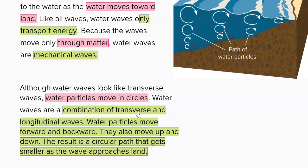Since it's a combination of both, water particles will move forward and backward—that's longitudinal—and also move up and down—that's transverse. This will result in a circular path that gets smaller and smaller as the wave approaches the land.